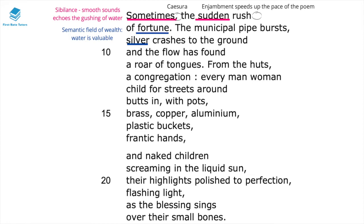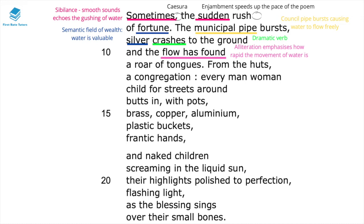This belongs to the semantic field of wealth, showing just how valuable water is. The municipal pipe bursting refers to a council pipe that bursts, causing water to flow freely. In line nine, 'crashes' is a really dramatic verb to show how sudden and unexpected this good fortune is. In line ten, 'the flow has found a roar of tongues' — the alliteration of 'flow' and 'found' emphasises the rapid movement of this water. Moreover, the onomatopoeia of 'roar' and the noun 'tongues' shows how thirsty the people are and how unbelievable this good fortune is for them.